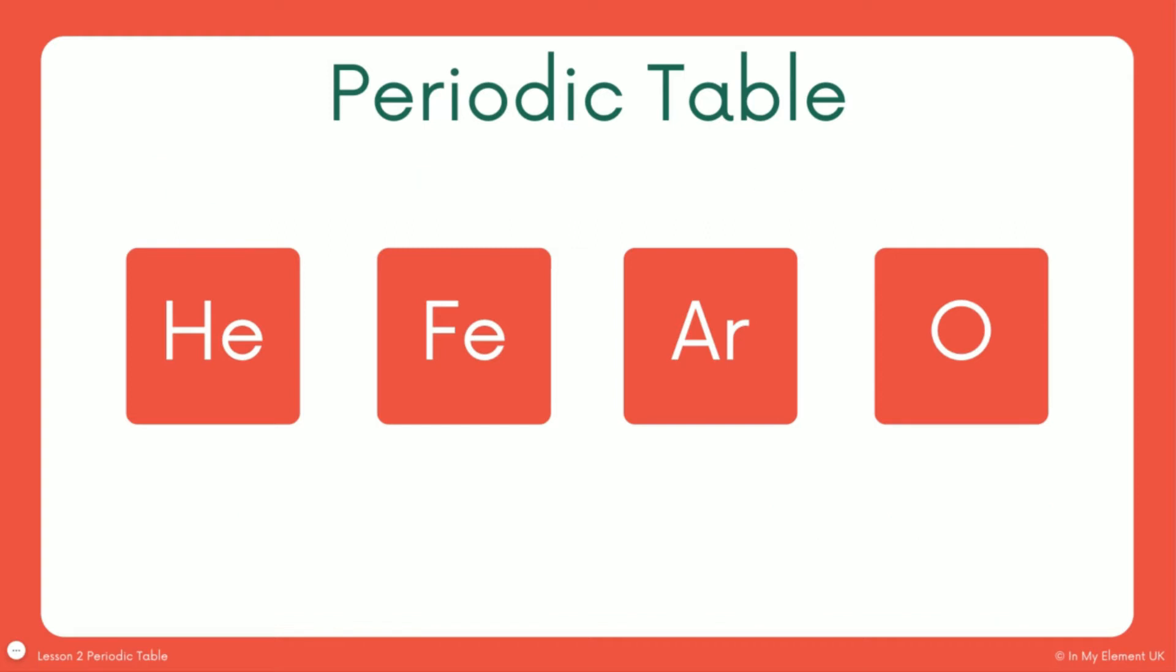Just to tell you what each one is. HE is helium. FE is iron. Notice how the symbol doesn't represent the letters from the name on that one. AR is argon. And O is oxygen. And they're all found in different places.